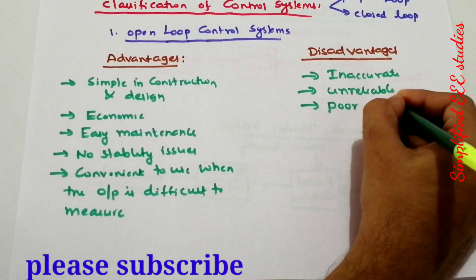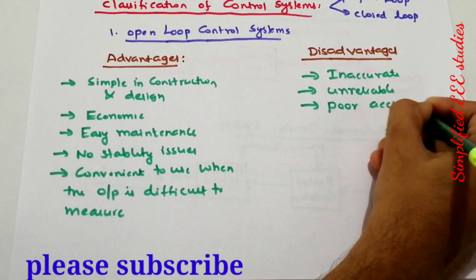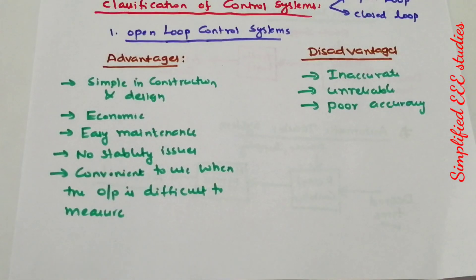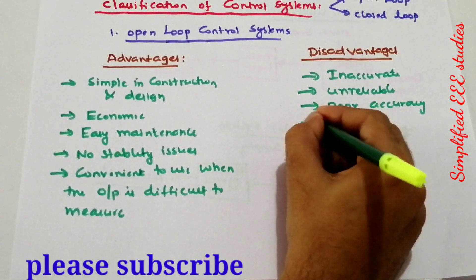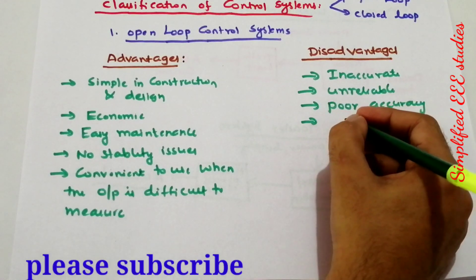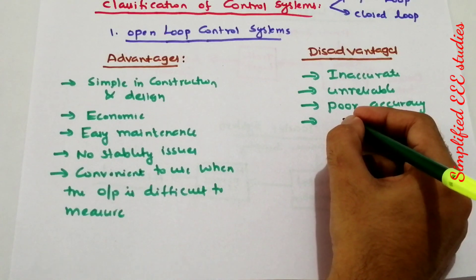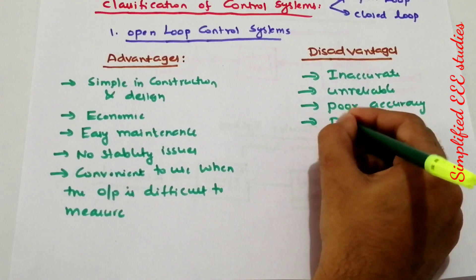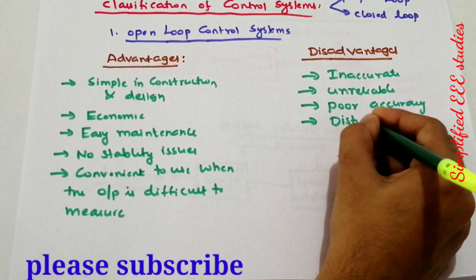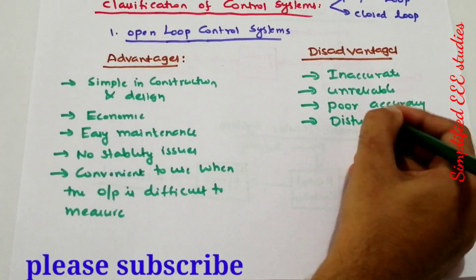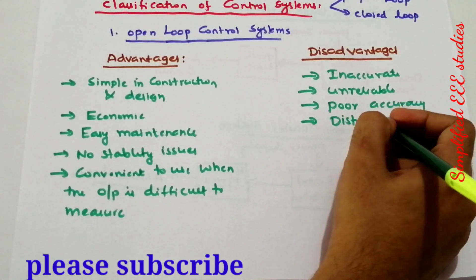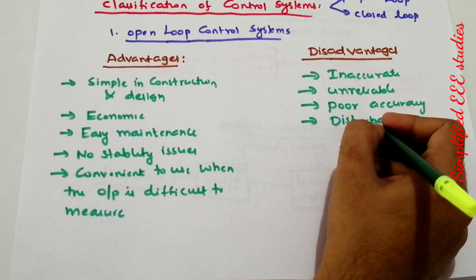It has poor accuracy and is not an accurate control method. Another drawback is that any changes in the output cannot be controlled automatically. This means disturbances cannot be filtered out—any changes in the output cannot be corrected automatically.